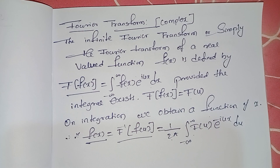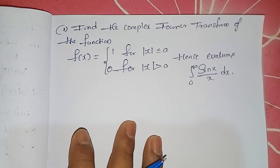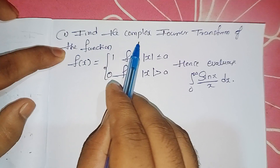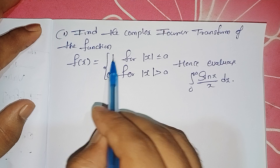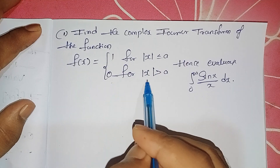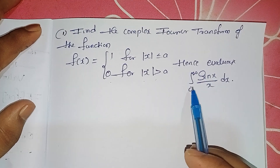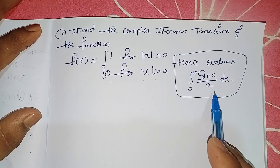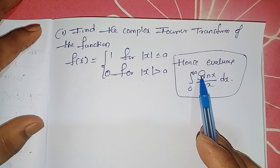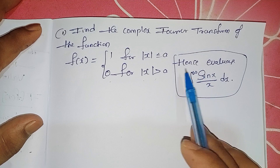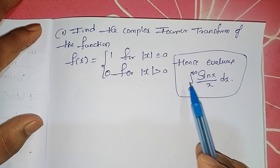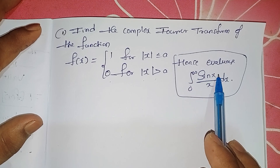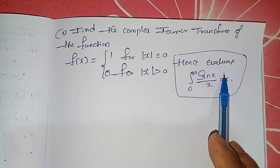Now with respect to this Fourier transform we will solve some basic problems, and I can also explain the beauty of Fourier transform. The example is: find the complex Fourier transform of f(x) = 1 for |x| ≤ a, and 0 for |x| > a. Also evaluate the integral from 0 to infinity of (sin x / x) dx. This is very interesting because such integration is somehow difficult using normal methods, but using Fourier transform and inverse Fourier transform we can easily find it without directly integrating the function — that is the beauty of Fourier transform.